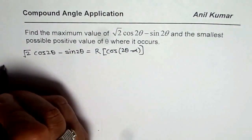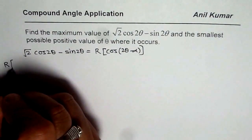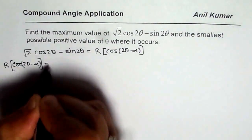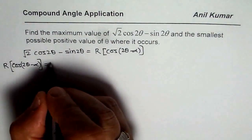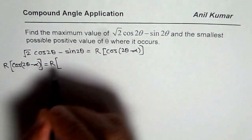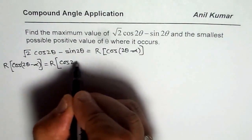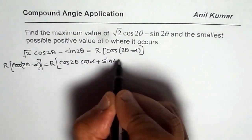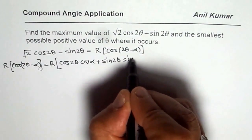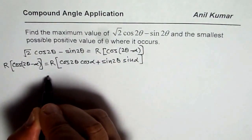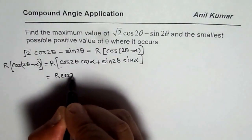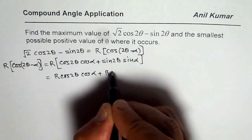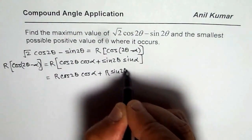Let us begin with r·cos(2θ − α). Using the compound angle formula we can expand this. When we expand, we get r·cos(2θ)·cos(α) + r·sin(2θ)·sin(α).